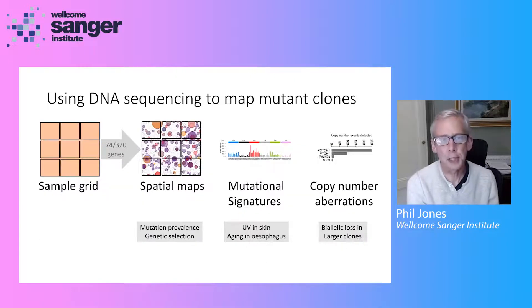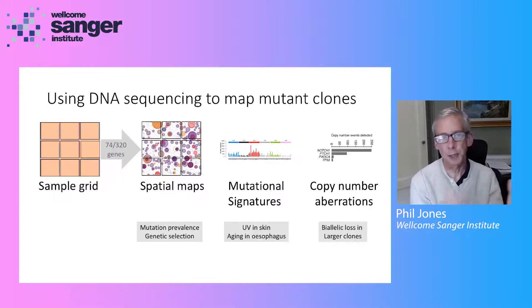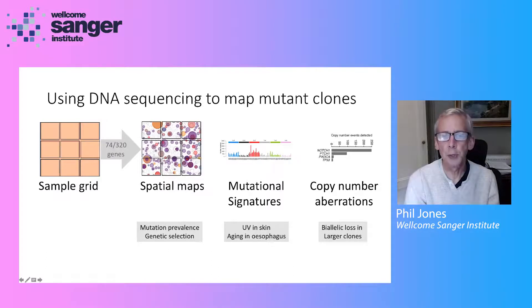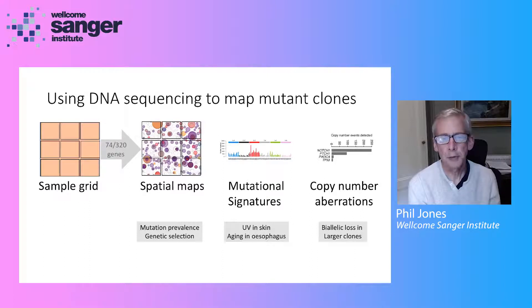In the esophagus, we collected grids of small pieces, each about two millimetres squared of the epithelium, and sequenced very deeply for 74 or 300 genes — the usual suspects found in cancers. Using that data, we could construct spatial maps connecting clones that span different grid squares, producing a physical map of mutations. This data also gives us information on mutation prevalence and on genetic selection.